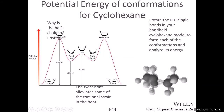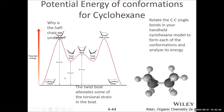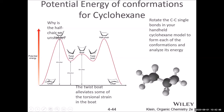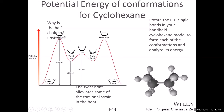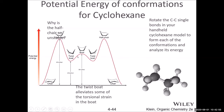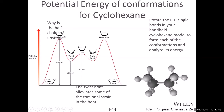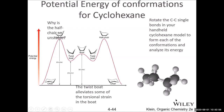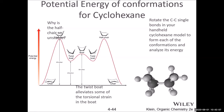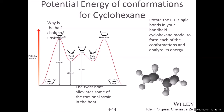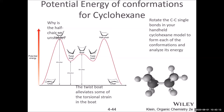Starting from the chair conformation and twisting along a single bond gives other structures, including the boat. You can easily see this with a model. An animation online shows the transition from chair to boat — twist one bond and it becomes a boat. This is called ring twist or ring flip.